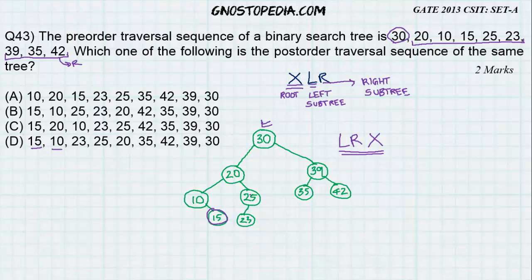Once we are done with 10, we move to the right of 20. That is 25. 25 has a left and hence we move to 23. Then 25, 20.